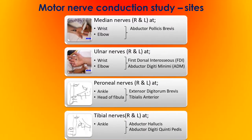The sites for motor nerve conduction studies are: the median nerve of the right and left arm at the wrist and elbow — the muscle typically recorded is abductor pollicis brevis; the ulnar nerve of the right and left arm at the wrist and elbow — the muscles are first dorsal interossei and abductor digiti minimi; the peroneal nerve of the right and left leg at the ankle and the head of the fibula — the muscle is extensor digitorum brevis and tibialis anterior; and the tibial nerve of the right and left leg, stimulated at the ankle — with muscles abductor hallucis and abductor digiti quinti pedis.